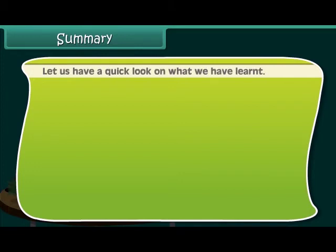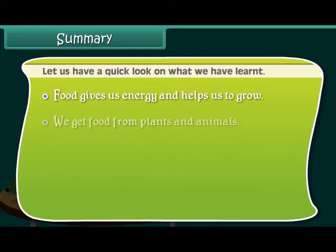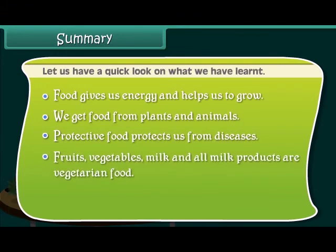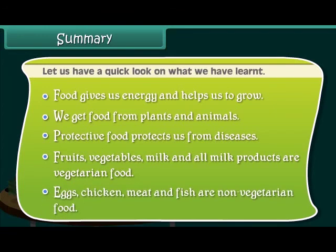Summary: Food gives us energy and helps us to grow. We get food from plants and animals. Protective food protects us from diseases. Fruits, vegetables, milk, and all milk products are vegetarian food. Eggs, chicken, meat, and fish are non-vegetarian food.